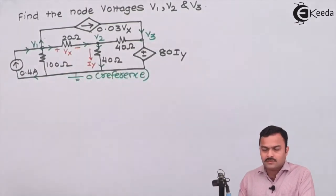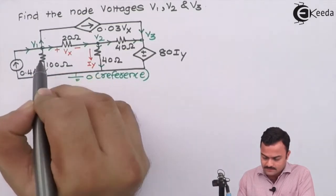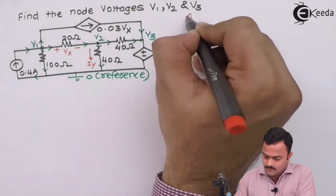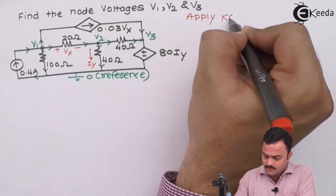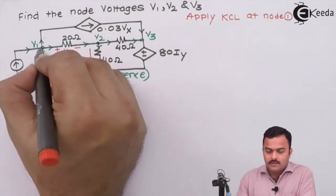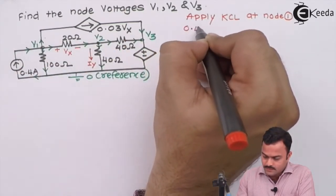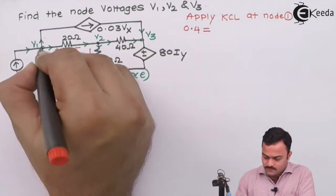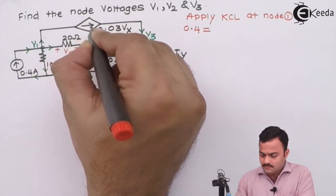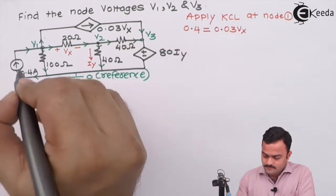So here we have considered all the conditions and restrictions to mark the current directions, and we are getting current directions like this. We are now ready to apply KCL node by node. Let's apply KCL at node one. To node one, four branches are connected. One is incoming with the current source 0.4 ampere, so 0.4 is on the left side. Equal to, we write the equation for the dependent current source with value 0.03 Vx.